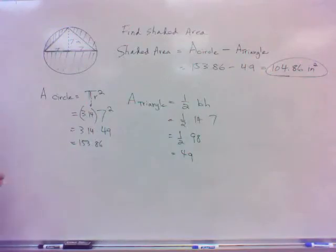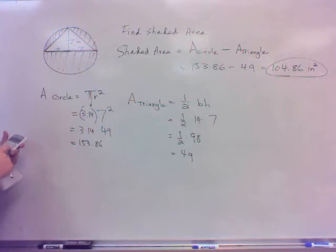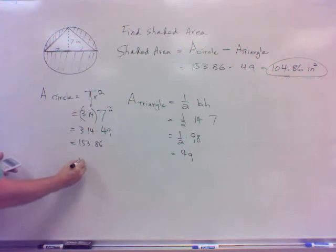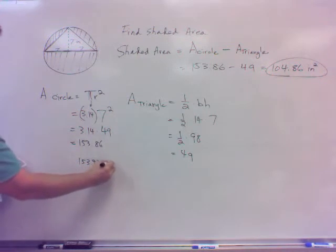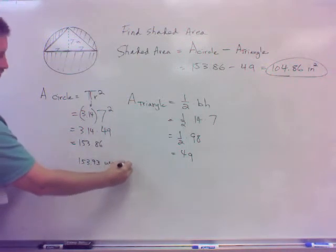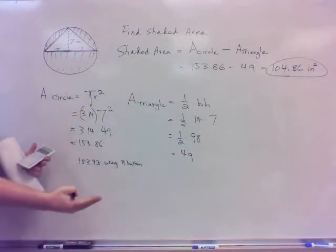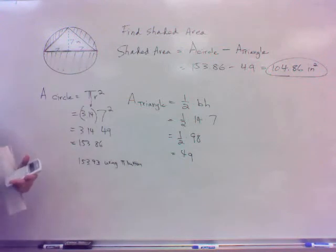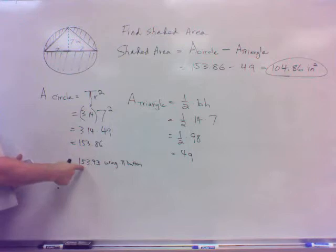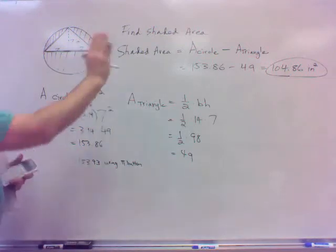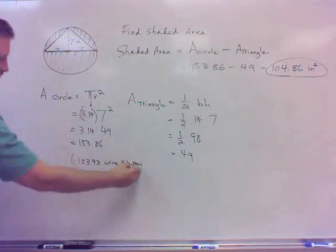Now, the other thing, real quick note here on that, if I use the pi button on the calculator, let me note there. You get 153.93. So that's what I'm saying. You get a little different answer. I won't count that wrong, whichever one you use. Because the book uses 3.14. This is probably actually more accurate, the 153.93. So that would give you a little different answer. So either one.